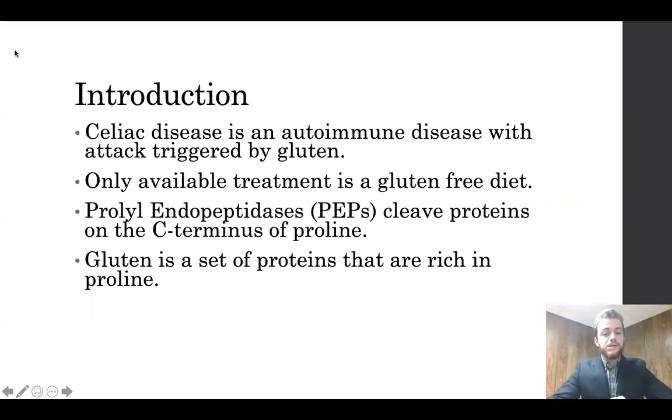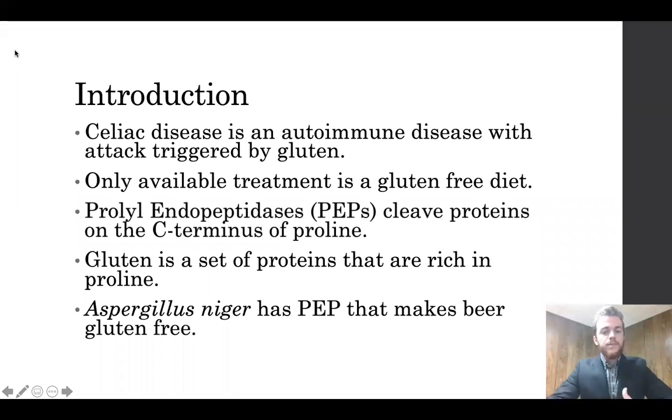Now gluten is a set of proteins that are rich in proline, especially the alpha-gliadin component, which is what triggers the autoimmune response when it reaches the small intestine. So the idea is to find a PEP that can survive the harsh conditions of the stomach and break apart the gluten before it reaches the small intestine.